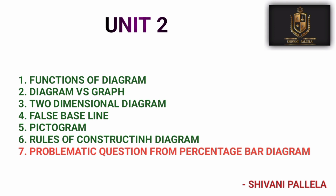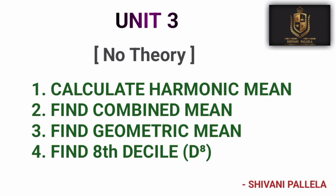For Unit Two short questions, Questions 1 to 6 are theory and Question 7 onwards may be problematic. If a problematic question is asked from Unit Two in Part A, they will ask for a percentage bar diagram — all the data will be given and you need to present it as a bar diagram. Graph paper will be provided at the examination center; you don't need to carry any. Important theory questions include: functions of diagrams, and diagram versus graph.